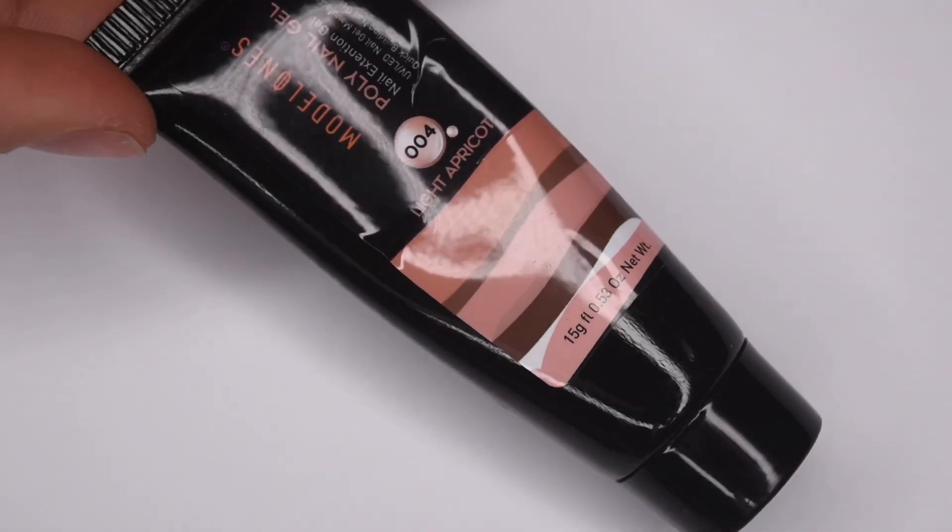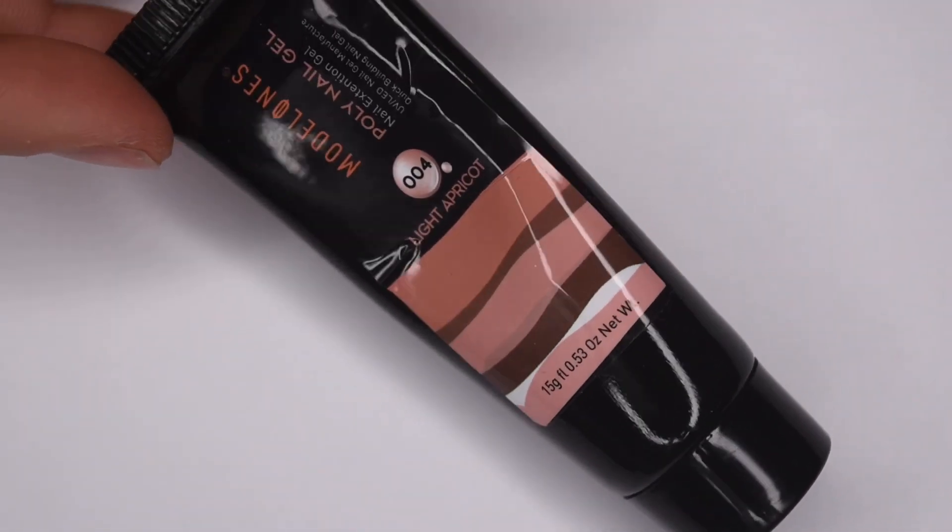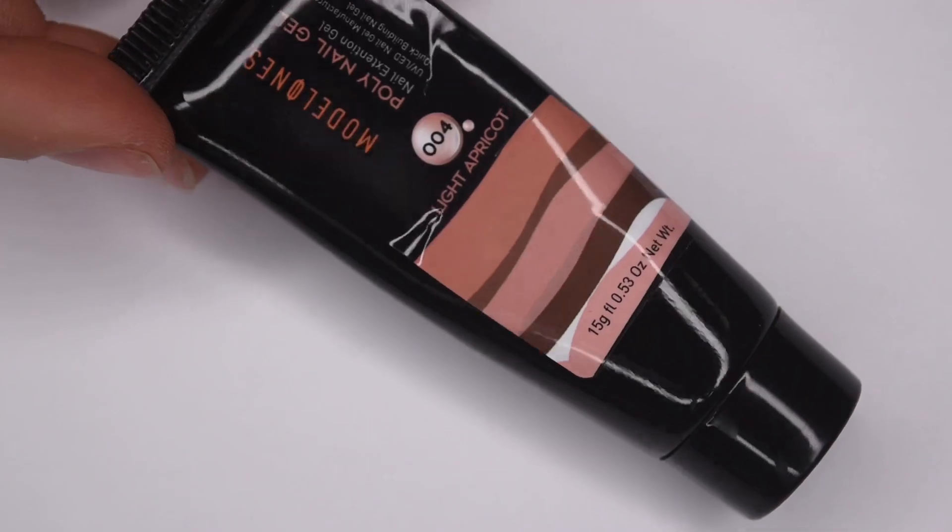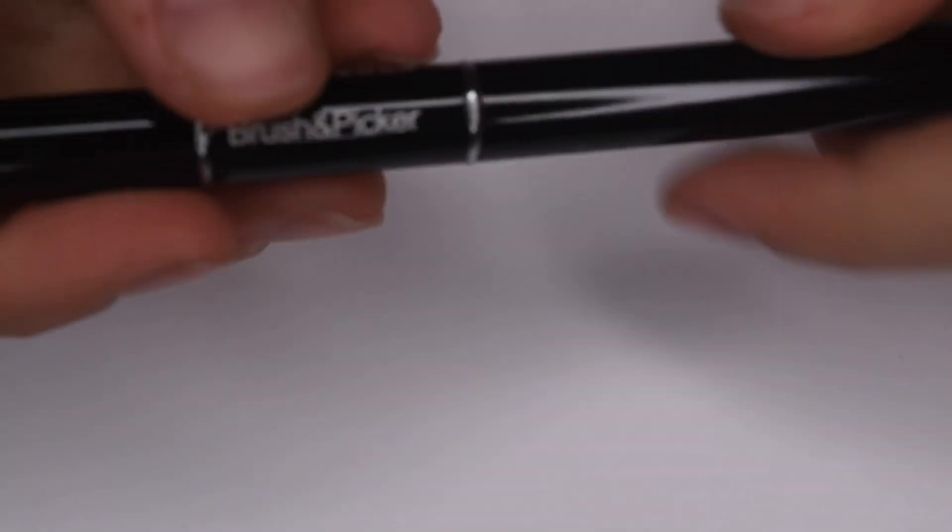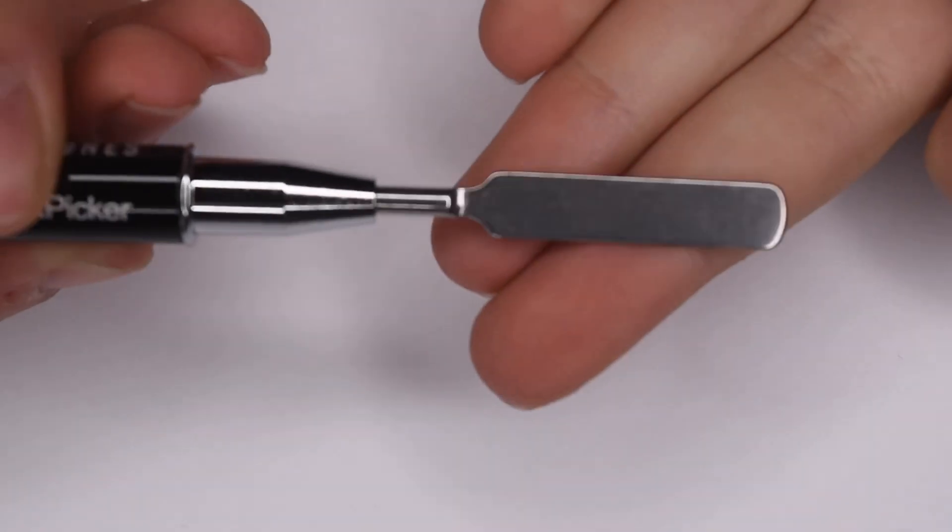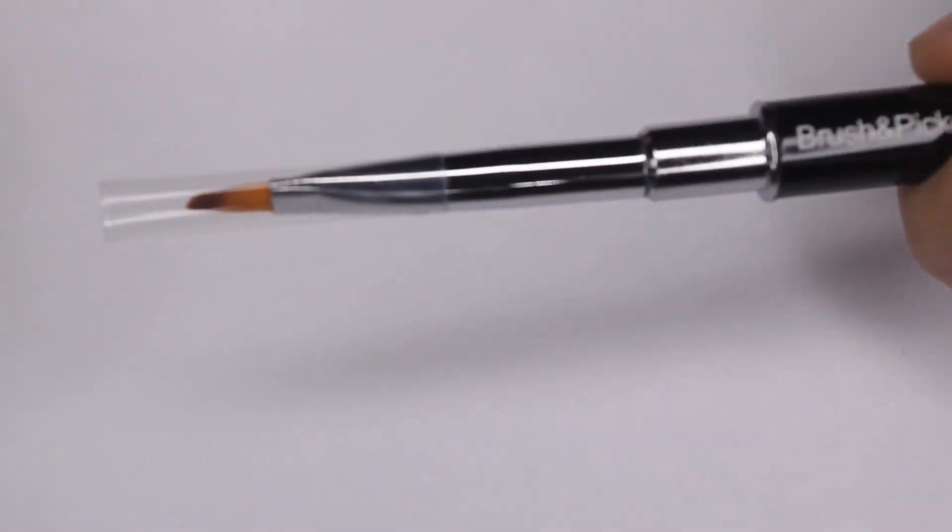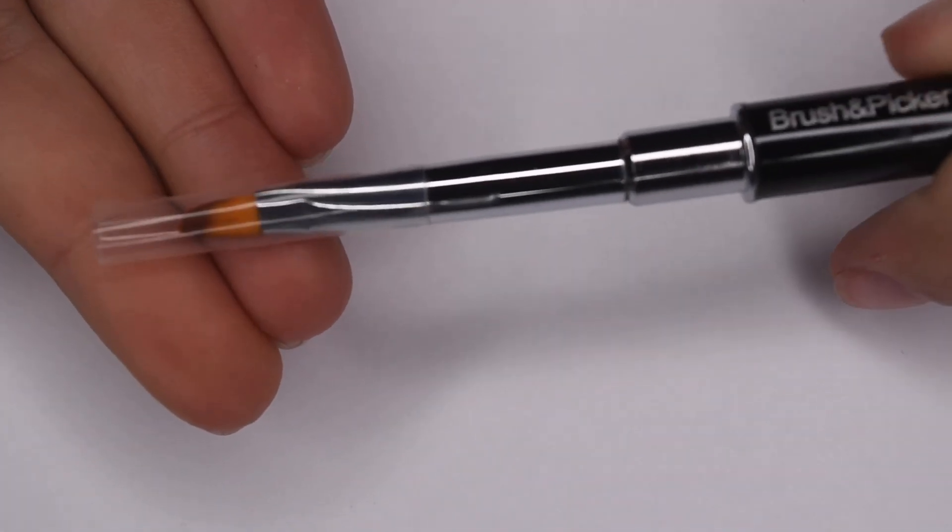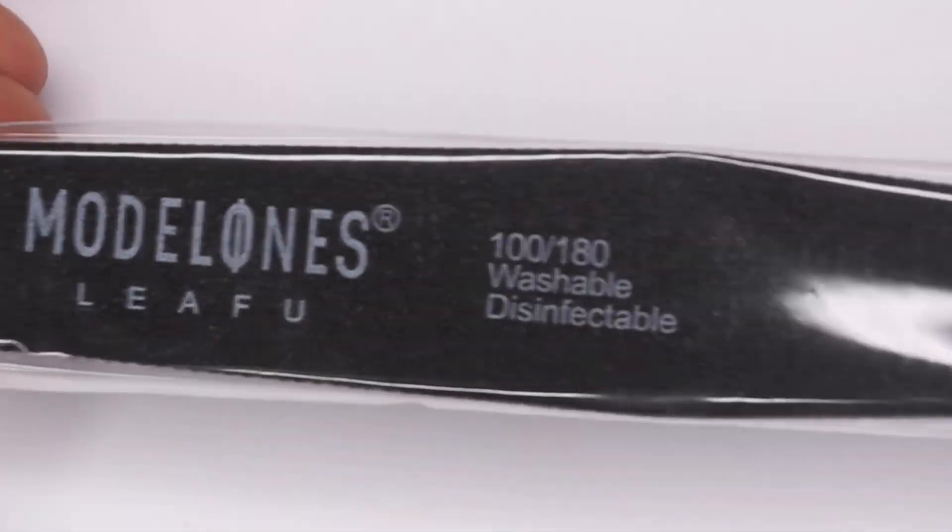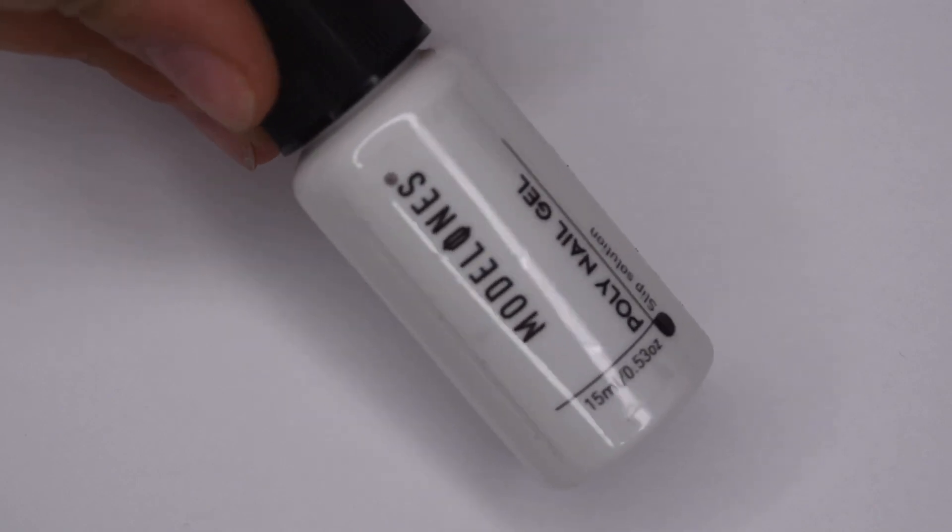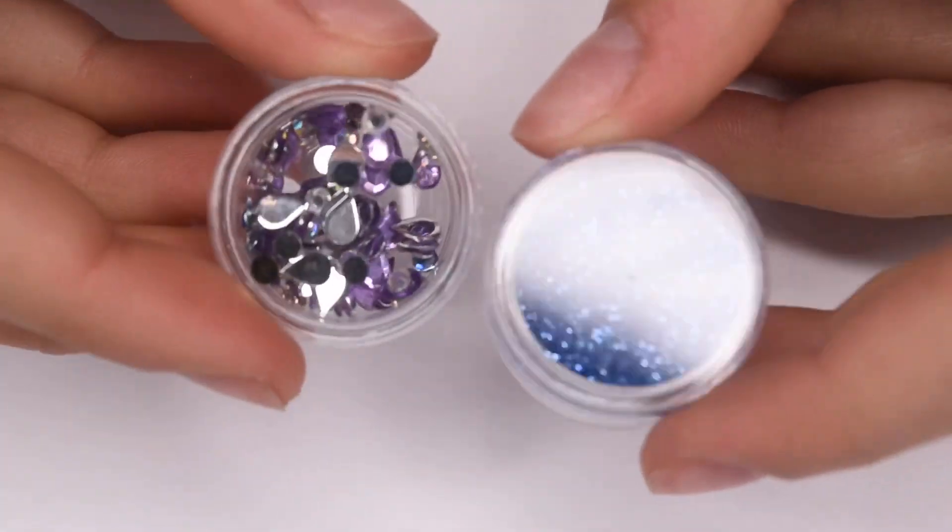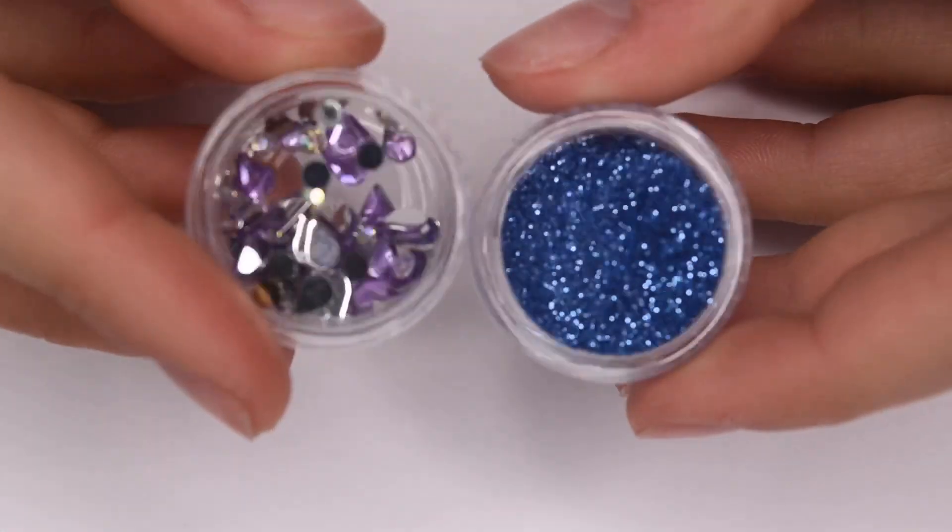And for my manicure today, I decided to go in with 004 light apricot, which is my favorite. And I'm also going to be using the brush and picker tool. So one side has a metal spatula for scraping the polygel and then the other side has a brush to pat the polygel in place. I'm also going to be using the 100-180 nail file and the polygel nail slip solution. And the kit also came with glitters, but I won't be featuring them in this tutorial.